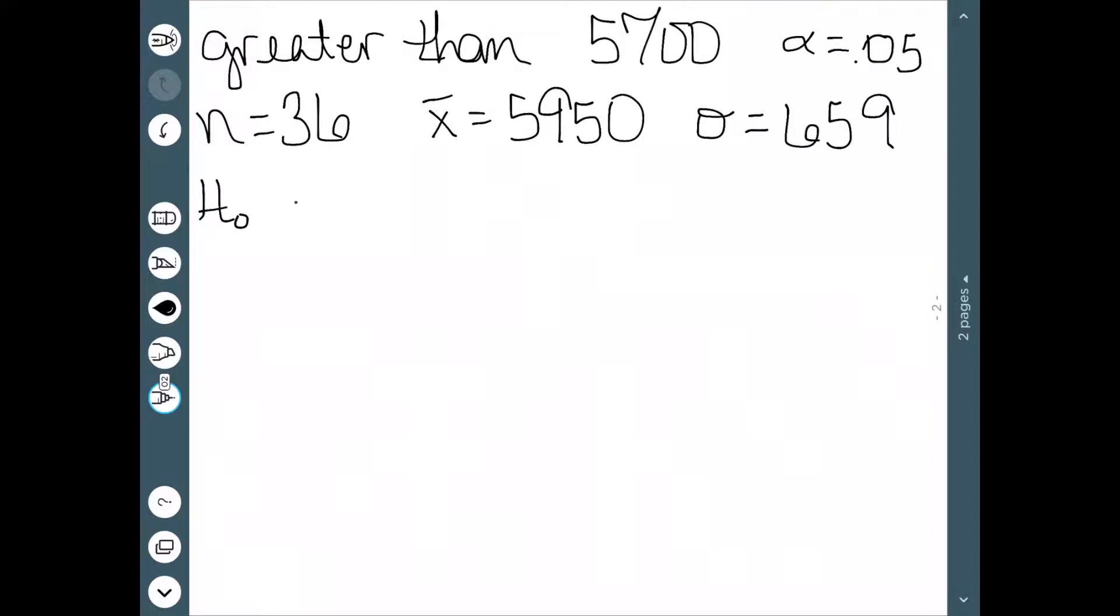Our null hypothesis would be that it's equal to 5,700. And our alternative would say that it is greater than. I'm still going to go ahead and draw a picture even though I'm not finding the critical value.